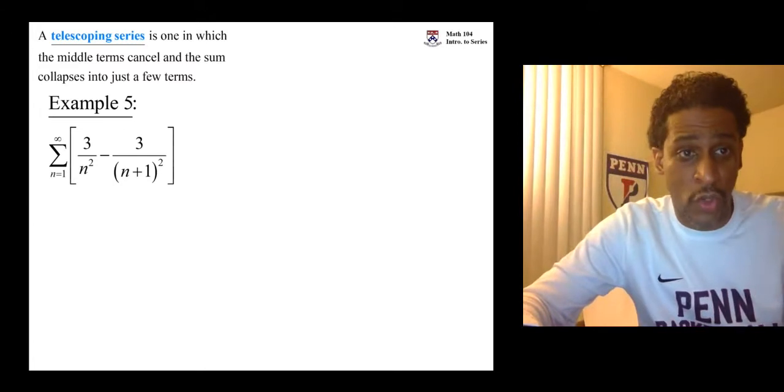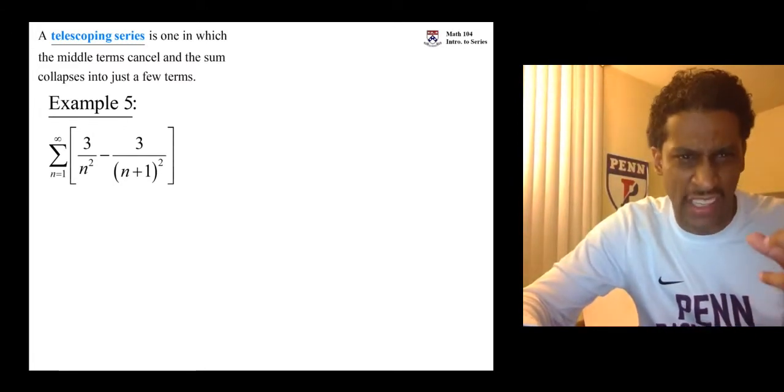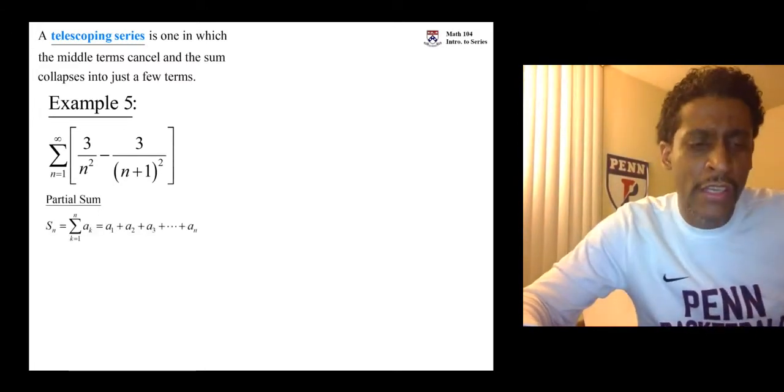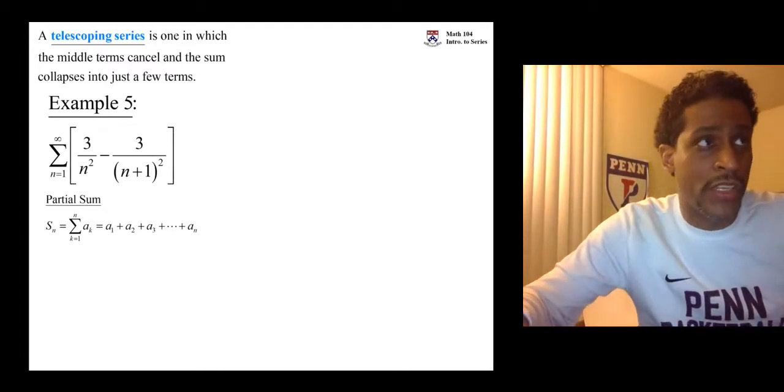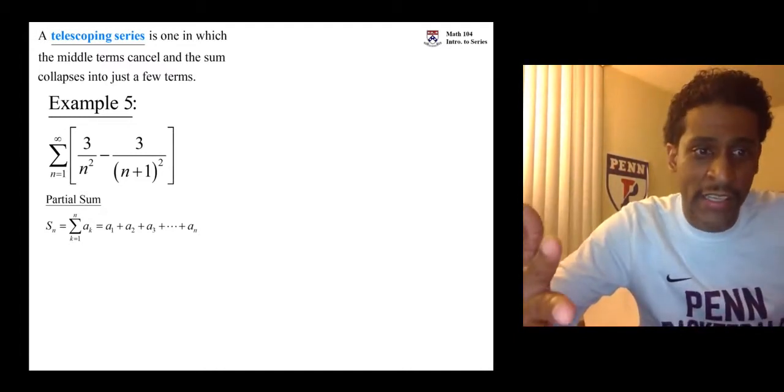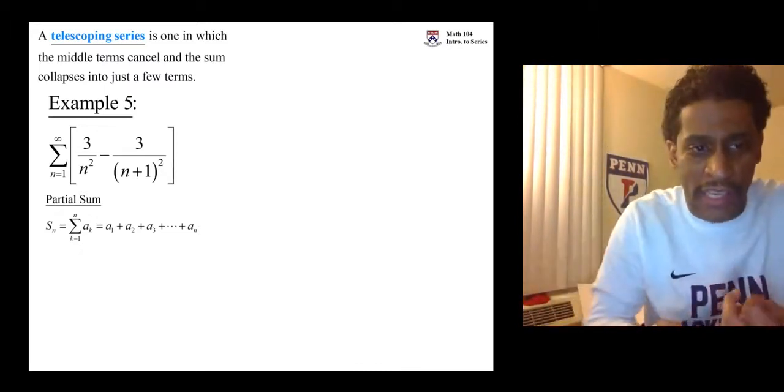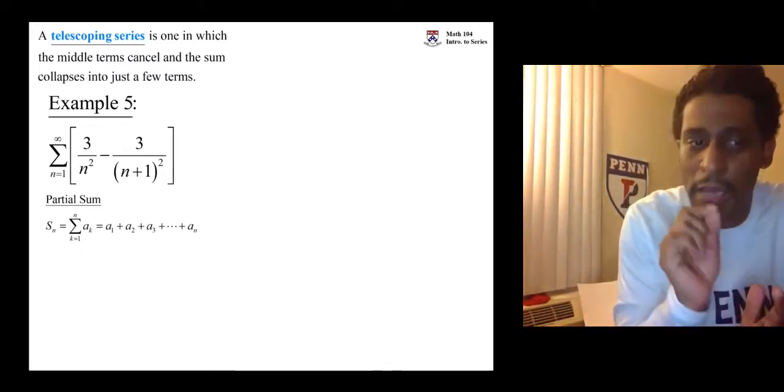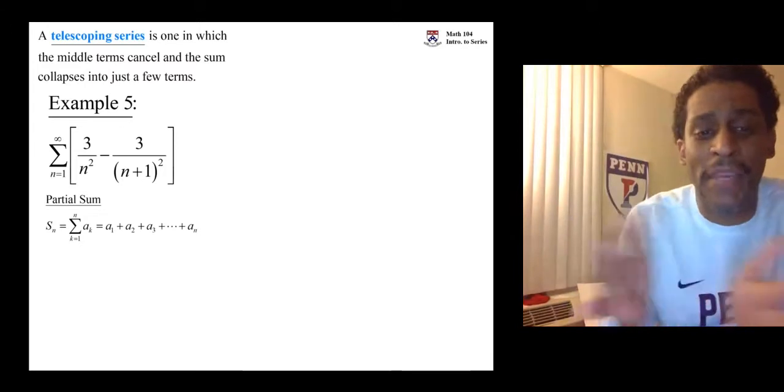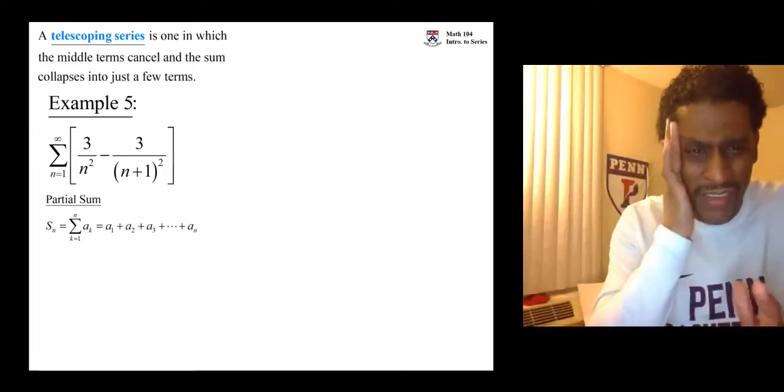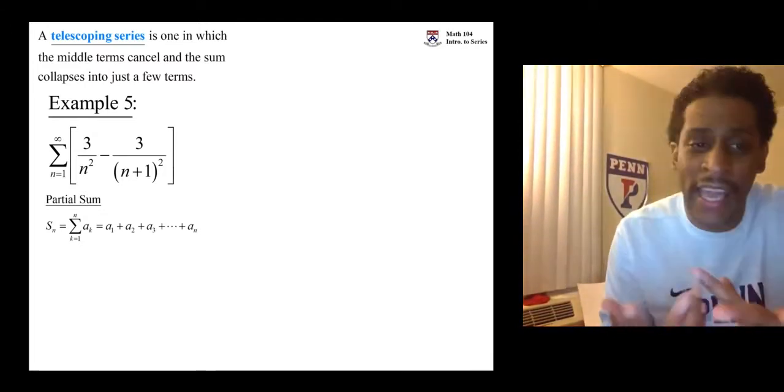Both for geometric and for telescoping, you can do that finding of the sum. The sum is equal to the limit as n goes to infinity on capital S sub n. Capital S sub n is the nth partial sum. It's stopping after n terms.